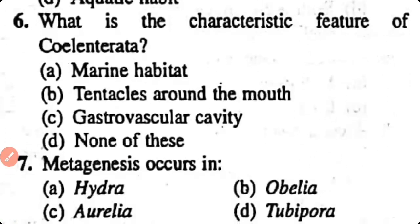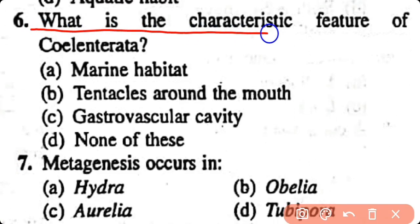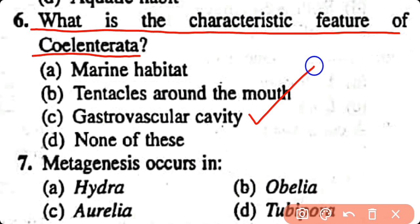Question number 6. What is the characteristic feature of Cnidaria? Marine habitat, tentacles around the mouth, gastrovascular cavity, none of these. Correct answer is option C. A specialised gastrovascular cavity is present in cnidarians — it is the organ for digestion as well as circulation.